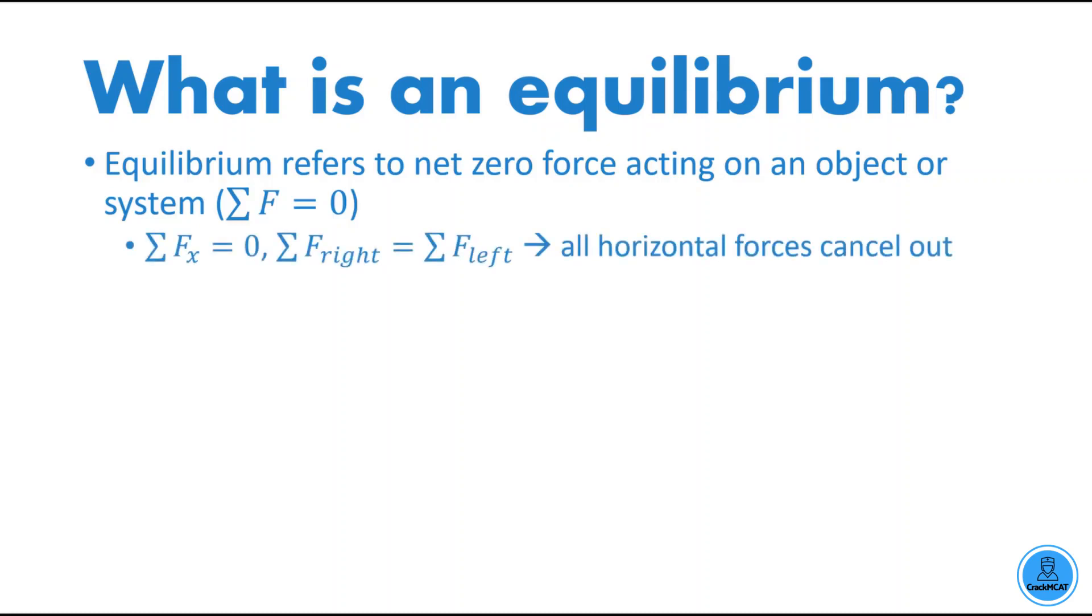So horizontally, if net X force is equal to zero, then it means that any force vectors that are going into the right must cancel with the ones going into the left. So all horizontal forces cancel out.